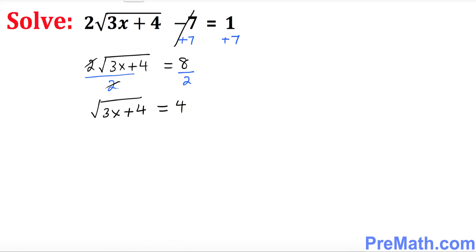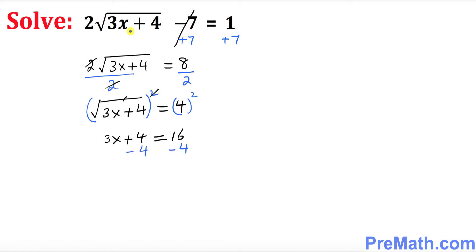Now we want to get rid of this square root. Since 2 is multiplying, we divide both sides by 2 — so the 2 cancels — giving us the square root of 3x plus 4 equals 4. Squaring both sides, we get 3x plus 4 equals 16. Subtracting 4 from both sides, 3x equals 12, and dividing by 3 gives x equals 4.